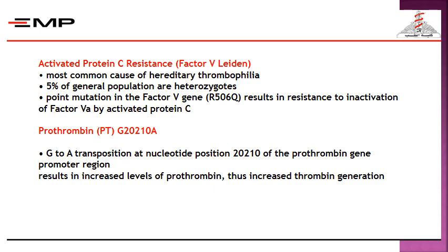Prothrombin G20210A involves a transposition between two amino acids at a nucleotide position of the prothrombin gene promoter, which results in increased levels of prothrombin and thus increased thrombin generation.